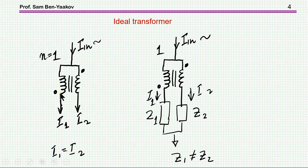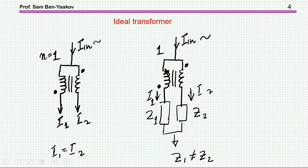Now let's look at the case of an ideal transformer used as a current sharing transformer. Notice the way it is connected — the dot is here and here. So if we have a current coming in, and this is a one-to-one transformer, and if the current I2 is going into the dot, then I1 will be coming out of the dot. Therefore, the two currents are equal, and each would be half the input current. Now, what happens if we have loads? In this case, if this is an ideal transformer, the current will be the same, but if the impedances are not the same, the voltage will not be the same.